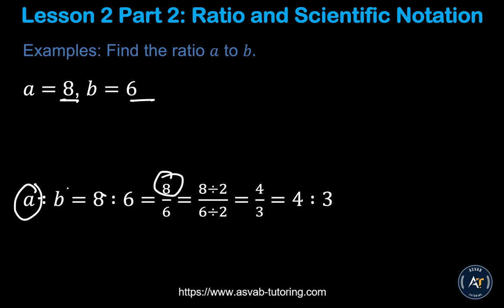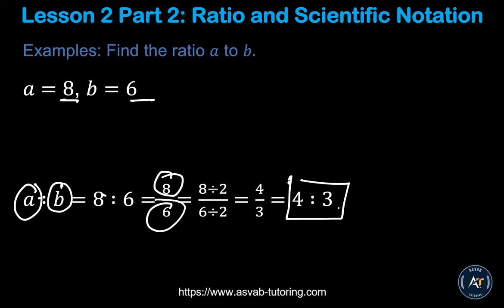Now you have to simplify, because a ratio is expressed in its simplest form. Dividing both top and bottom by 2 gives you 4 over 3, so the ratio is 4 ratio 3.